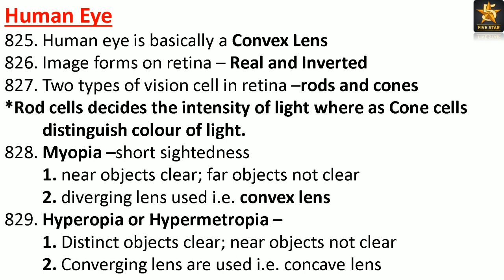Human eye is basically a convex lens. The image forms on the retina and is real and inverted. Two types of vision cells in the retina: rods and cones. Rod cells determine the intensity of light, whereas cone cells distinguish the color of light. Myopia (short-sightedness): near objects are clear but far objects are not. Corrected using a diverging (concave) lens.